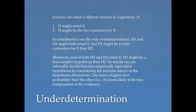Later in the class we'll be learning more about inference to the best explanation and what makes one explanation better than another. Lastly, even if both H1 and H2 entail E, H1 might be a less complex hypothesis than H2. So maybe we can rationally decide between empirically equivalent hypotheses by considering the intrinsic nature of the hypotheses themselves — one might have a higher prior probability or be less complex, and so be more likely to be true.